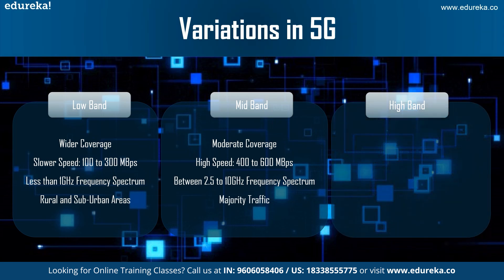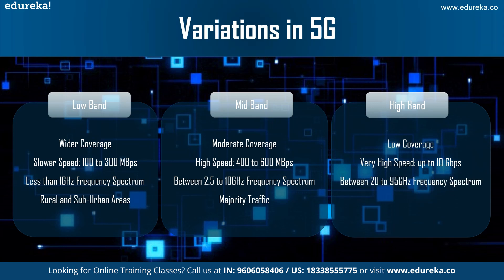High band frequency, on the other hand, gives low coverage, being unable to travel long distances. It offers very high speed — theoretically up to 10 Gbps and at least up to 1 Gbps. The frequency for this high band lies between 20 to 95 GHz in the spectrum, and as expected, it would mostly be found in urban areas.